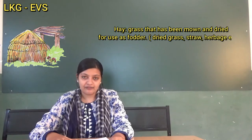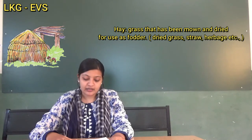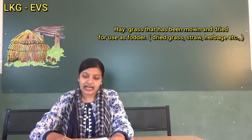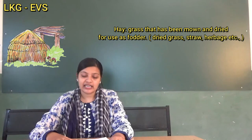Next, H-A-Y. Hay: grass that has been mown and dried for use as fodder, such as dried grass, straw, herbage, etc.